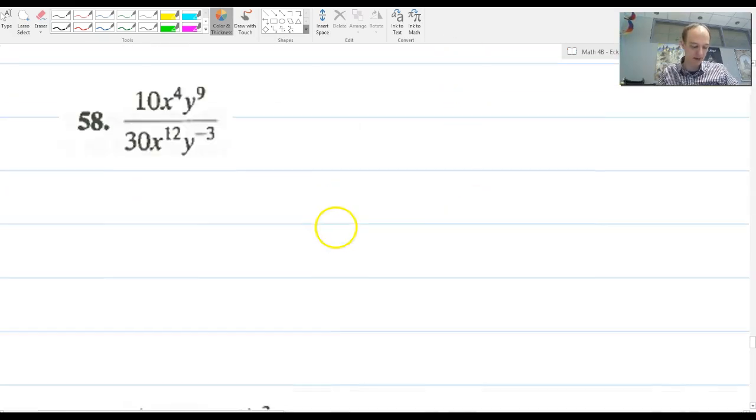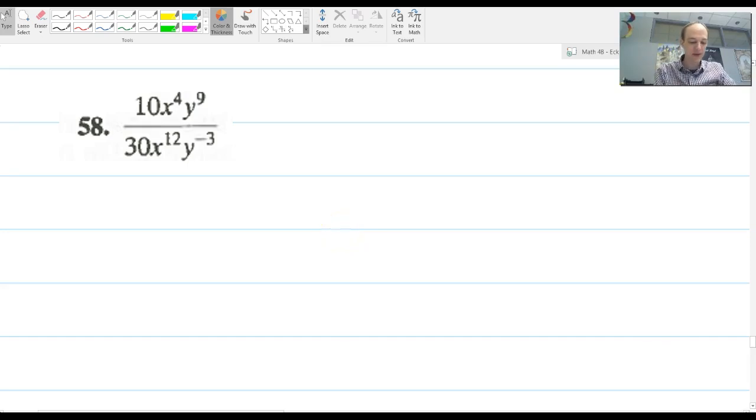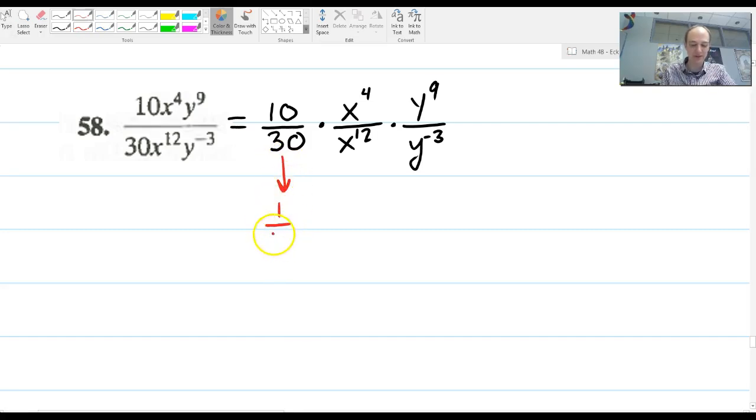Now I'm jumping up in numbers. We're going up pretty fast here. I'm going to jump up to 58. 10x to the 4th times y to the 9th all over 30x to the 12th y to the negative 3rd. I'm going to split this up into three fractions. Now you don't have to do this, but for this one example, that's the way I'm going to do it. So I'm going to do this as 10 over 30 times x to the 4th over x to the 12th times y to the 9th over y to the negative 3rd. All right. 10 over 30 reduces to 1 third. x to the 4th over x to the 12th. Well, that's going to be x to the 4 minus 12th, which is x to the negative 8th, or 1 over x to the 8th.